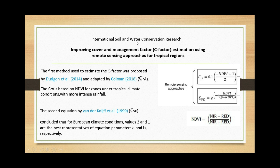This article is published in the journal International Soil and Water Conservation Research. The first method is used to estimate the C-factor by Durigon in 2014, which was later adapted and rectified by Coleman in 2018. The difference between the two equations is the 0.1 function. This equation is based on NDVI for zones under tropical climate conditions with more intense rainfall.